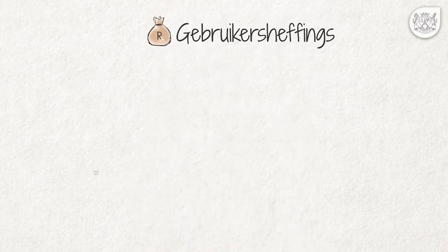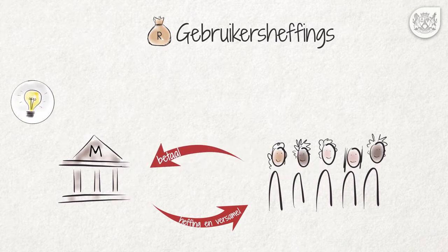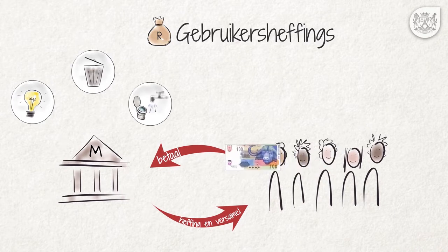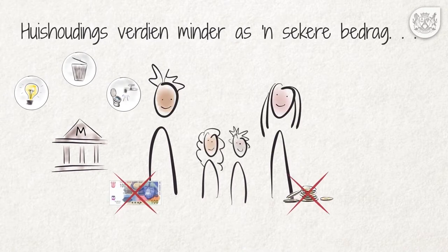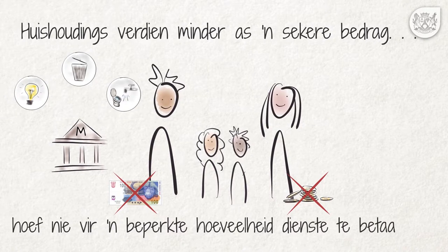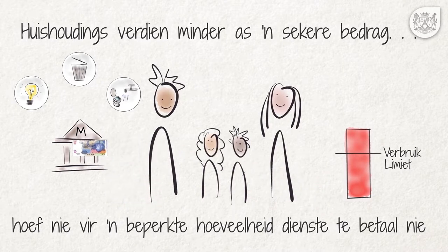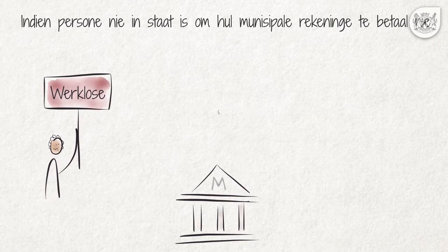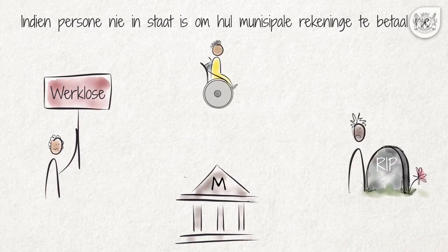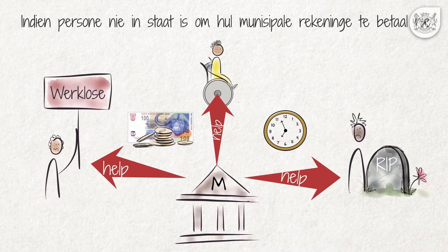Gebruikersheffings. Munisipaliteite hef en vorder gelde vir die gebruik van dienste soos elektrisiteit, vullisverwydering en water- en sanitasiedienste. Huishoudings met 'n inkomste laer as wat die munisipaliteit bepaal, hoef nie vir dienste verbruik minder as die neergelegde hoeveelhede te betaal nie. Word daardie hoeveelhede egter oorskry, moet die ekstra verbruik wel betaal word. Indien persone vanweë die verlies van hul werk, siekte of dood in die familie nie in staat is om hul munisipale rekeninge te betaal nie, kan die munisipaliteit dalk help deur of van die skuld te verminder of uitstel van betaling te verleen.